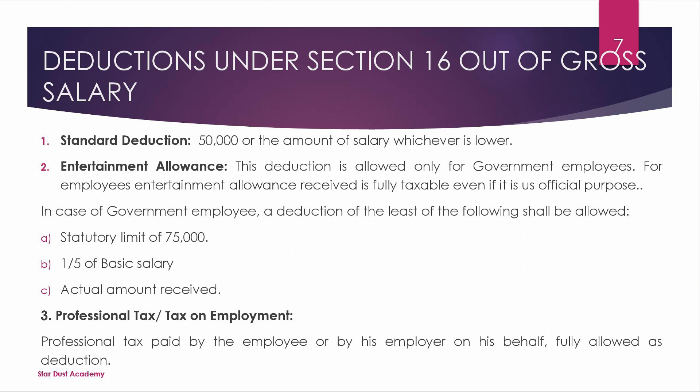If the salary is 50,000 and we apply standard deductions, and the result is negative, we treat it as nil. If deductions are 20,000, we have the maximum standard deduction. Entertainment allowance is only for government employees — they receive the minimum amount.